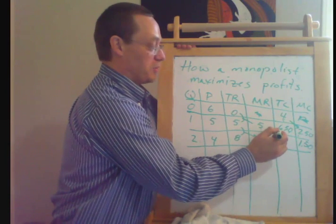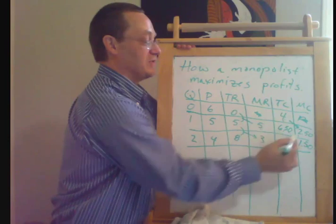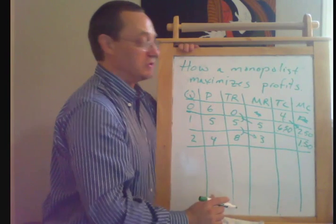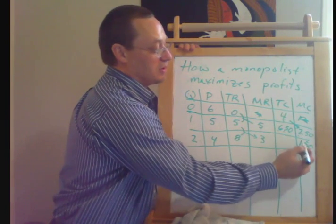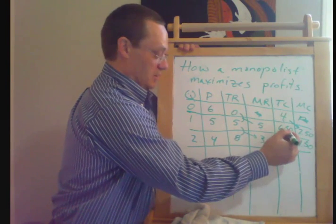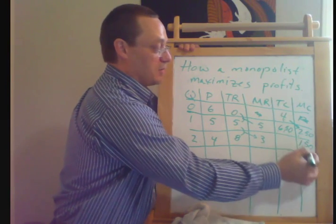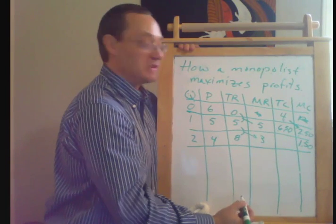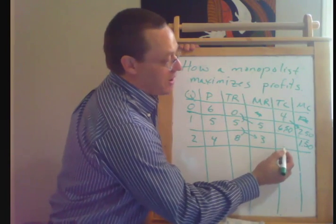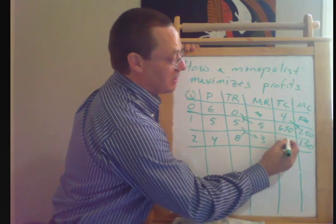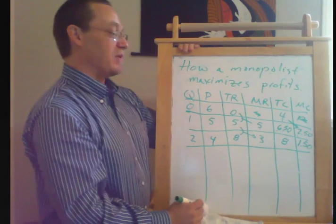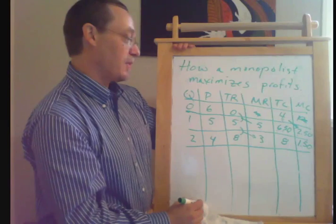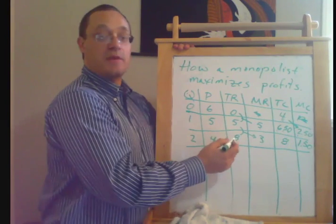Notice I can go ahead and solve this around. Total costs of one minus total costs of zero gets me the marginal cost of the first unit. We can also turn that around and go total cost of one plus marginal cost of the second gets us to total cost of the second. So total cost is $8.00, and this firm is now breaking even.